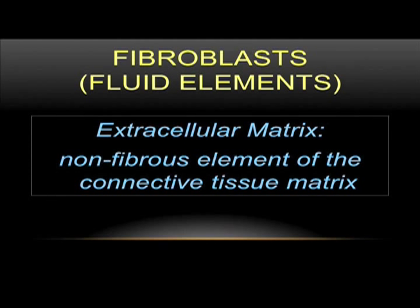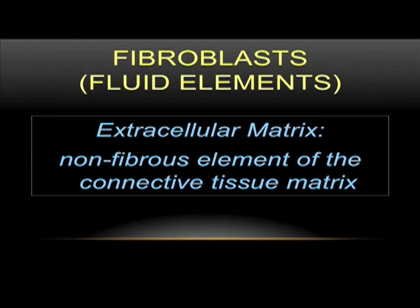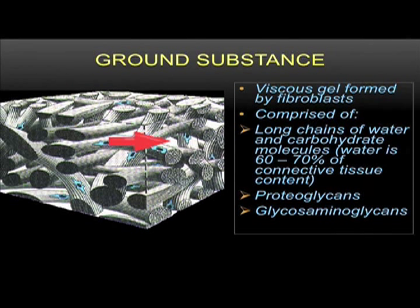Now, the next part we'll be looking at is the extracellular matrix, which is the fluid element that comes from the fibroblasts — the non-fibrous element of the connective tissue matrix. My good friend Greg Johnson is doing research with Sam Ward out of San Diego, looking at research related to this extracellular matrix in the triceps surae. On the slide we see a nice picture of the collagen fibers, fibroblasts on them, and an arrow pointing to the space where the extracellular matrix lies, also known as ground substance in the classical sense.